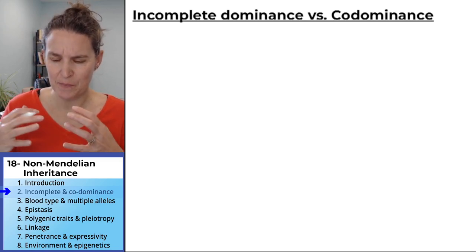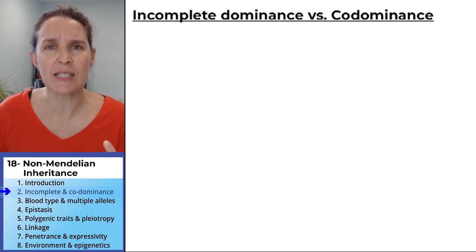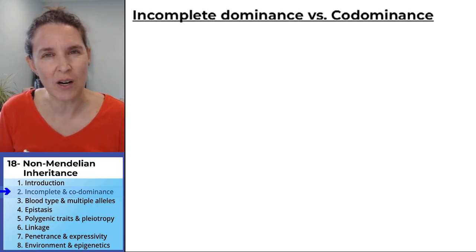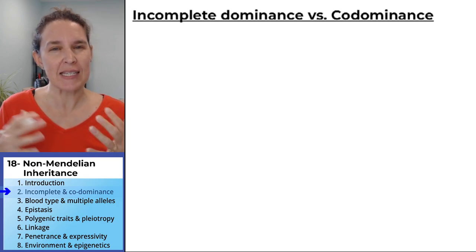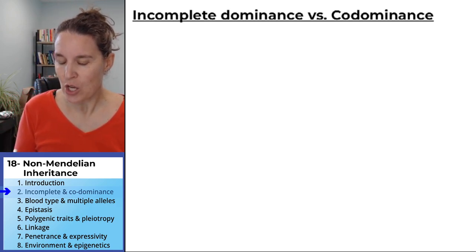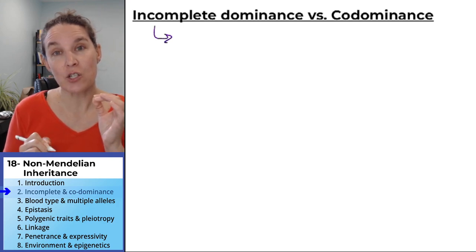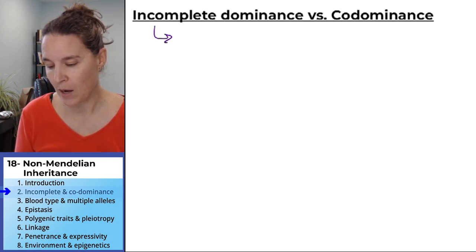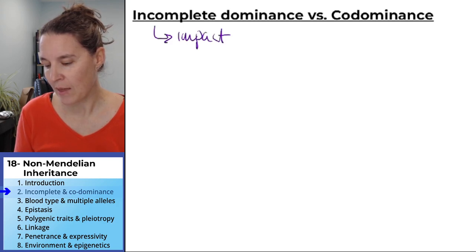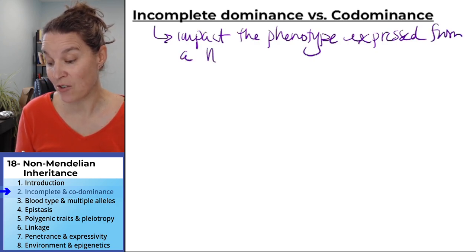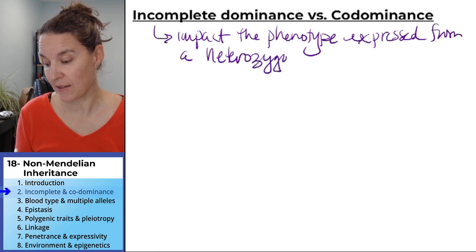Our first set of unique inheritance phenotypes and expressions that don't match what we would expect given our understanding of Mendelian patterns deal with how the dominant allele is expressed. We're going to look at two new ideas that relate to dominance: incomplete dominance and codominance. Both impact the phenotype expressed from a heterozygous genotype.